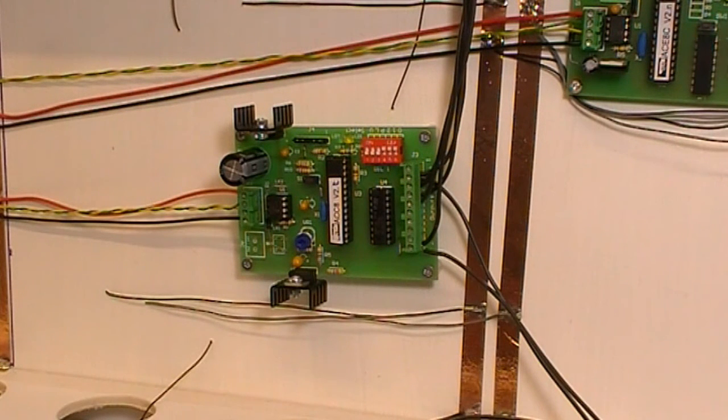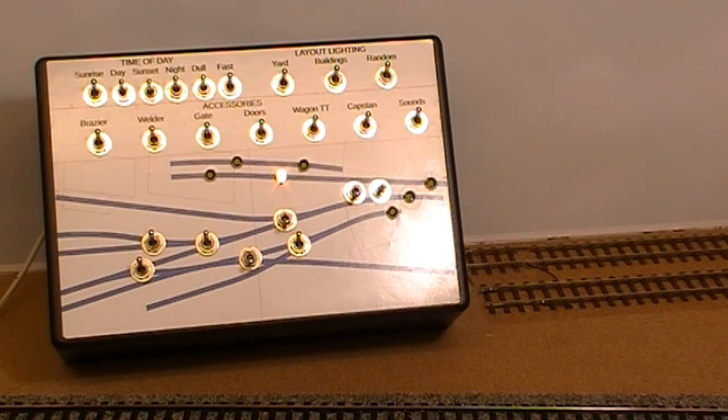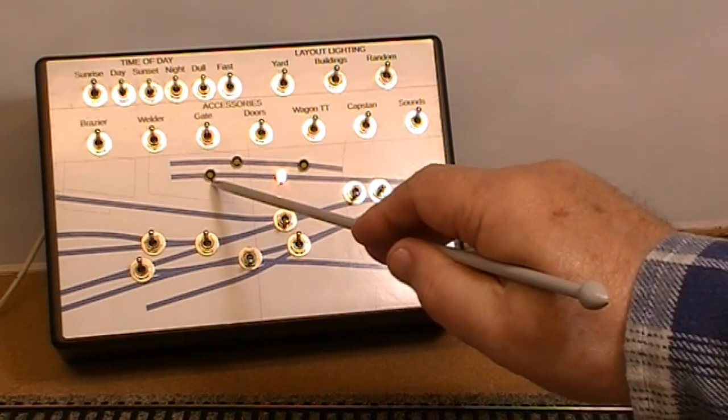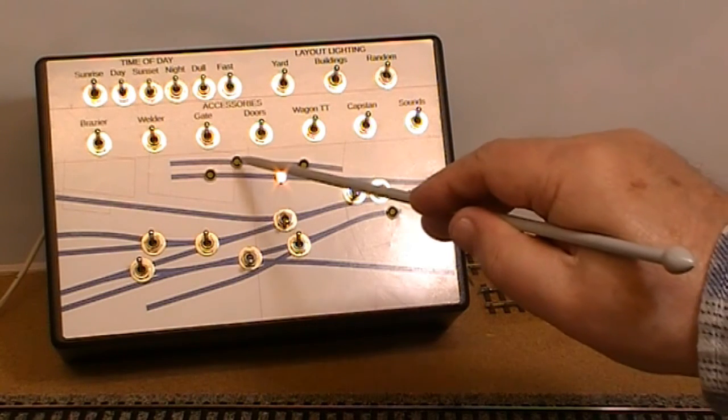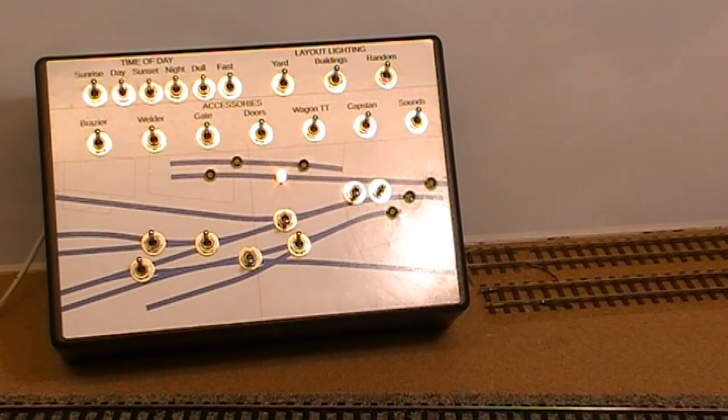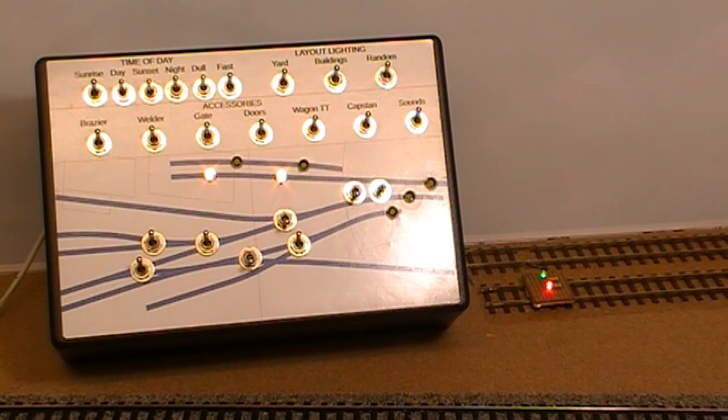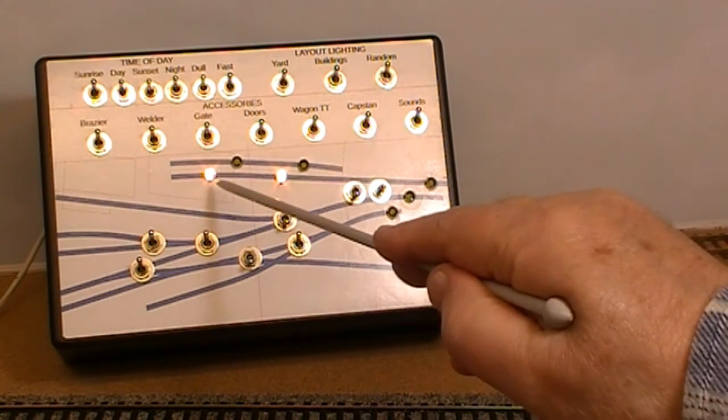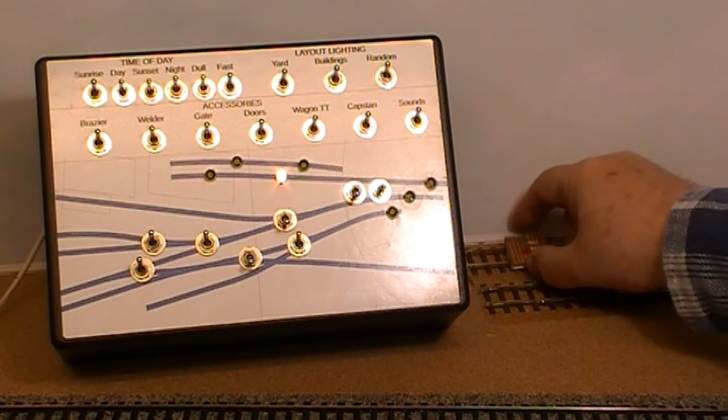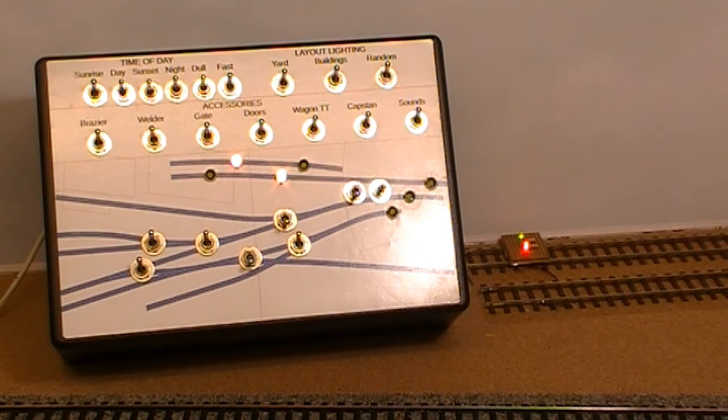Now I have the control panel showing on the screen and the two tracks in question which are these two. This one is indicated by this light, the back one is indicated by this light. So if I put a loco on the front one we have a loco on there effectively and the light is on, and if I put a loco on the rear one this light comes on.